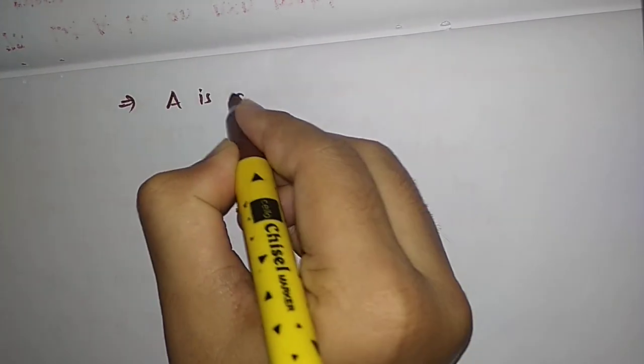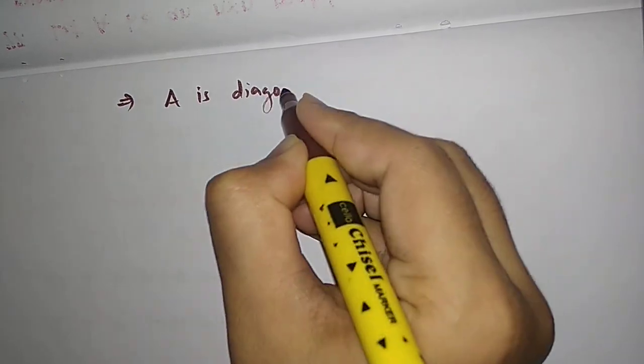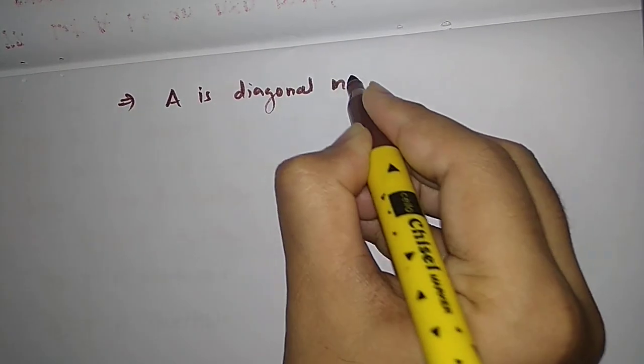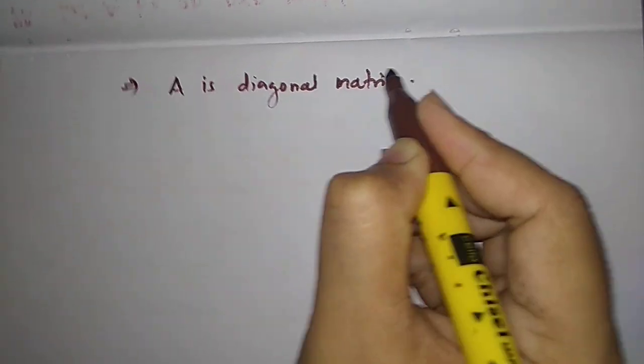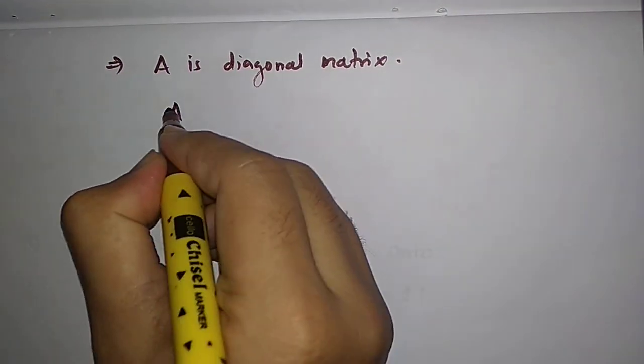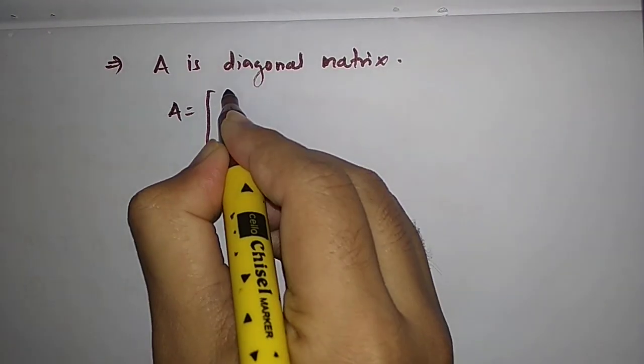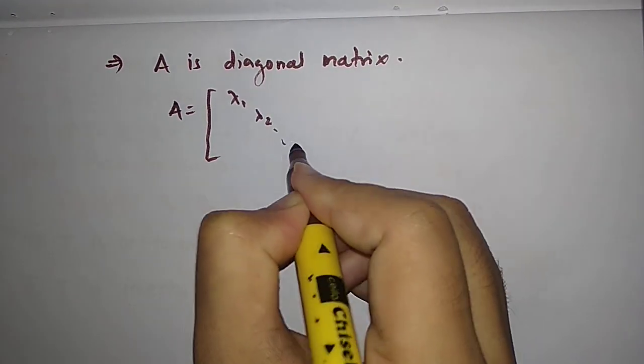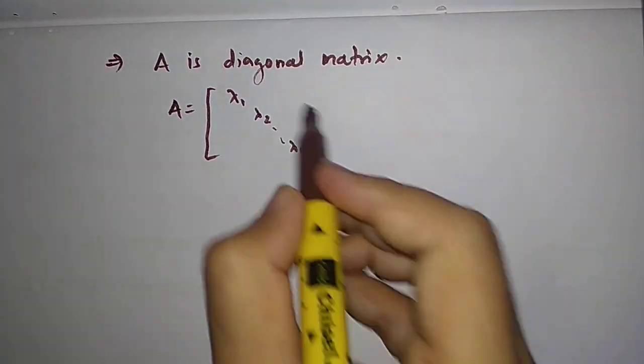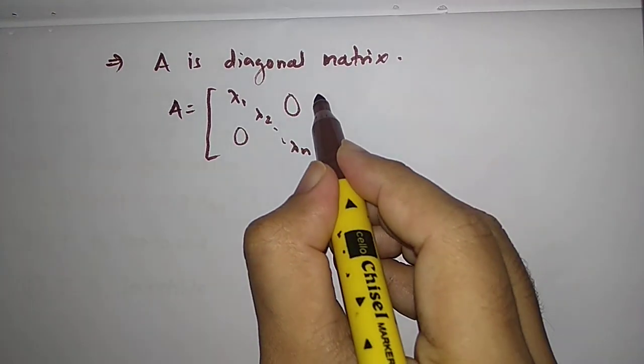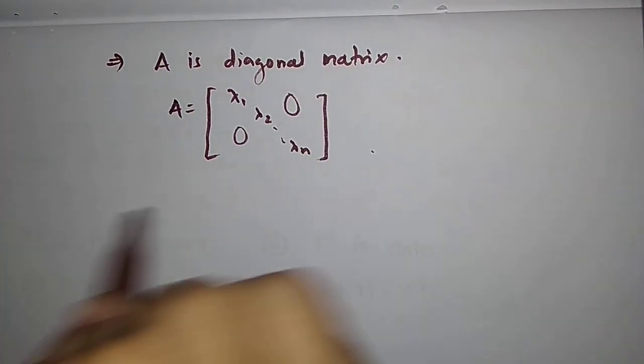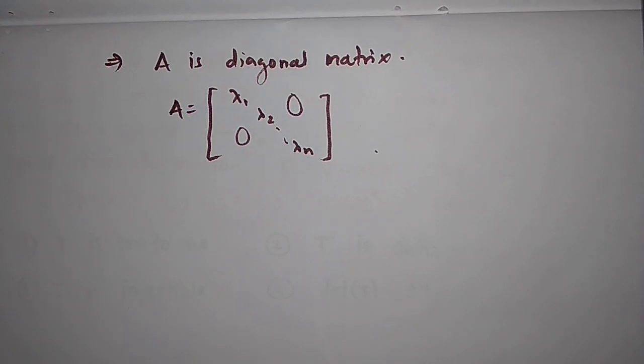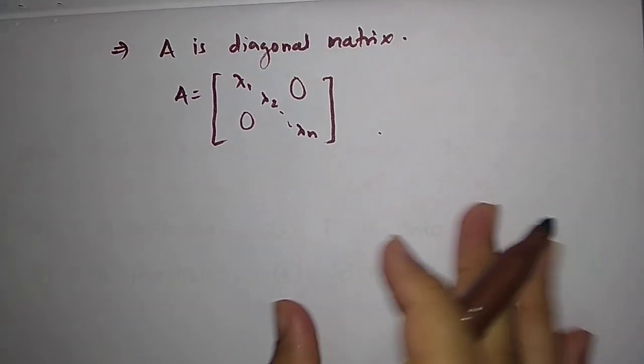So this will imply that A is a diagonal matrix and in particular it has to be exactly equal to λ_1, λ_2 up to λ_N at the diagonals and all other entries are 0. But we have not done it.